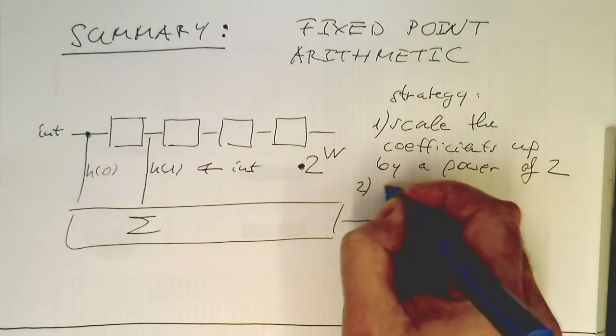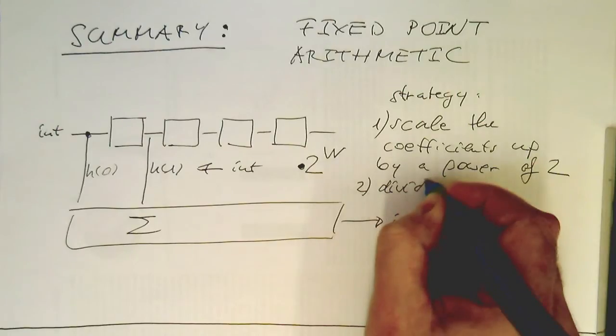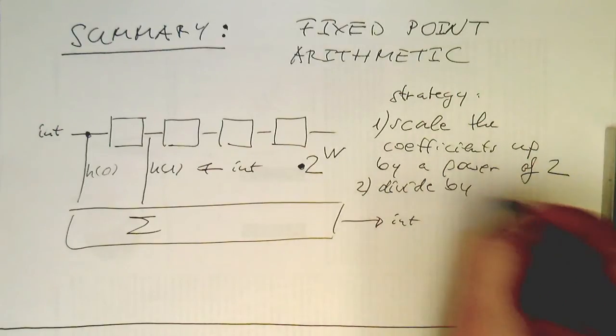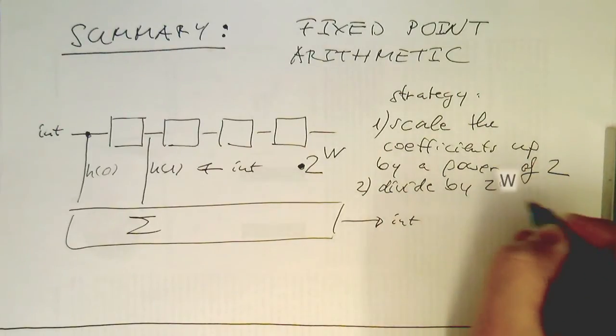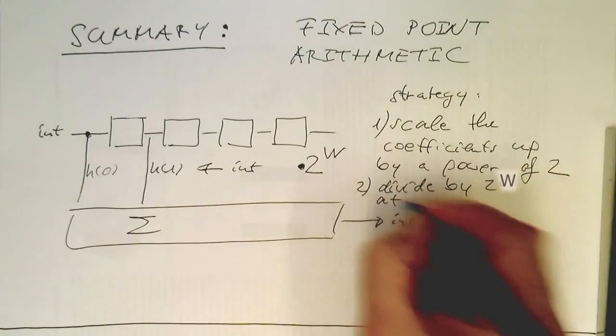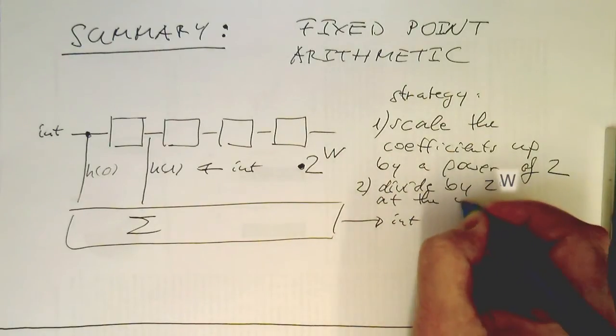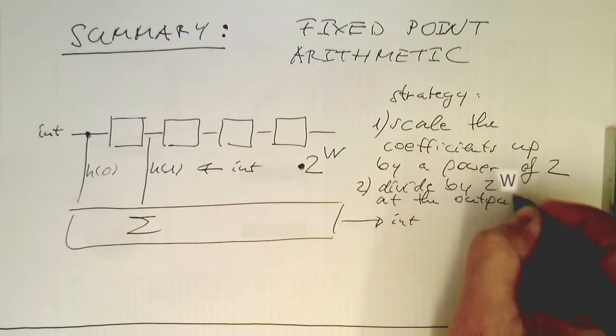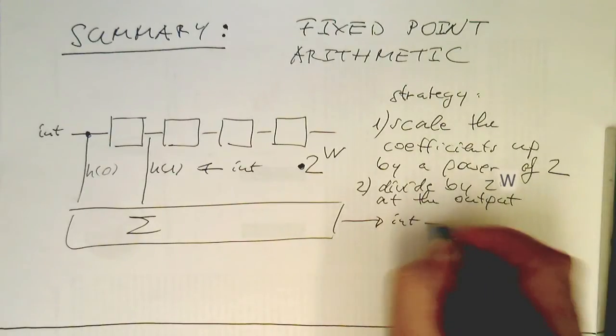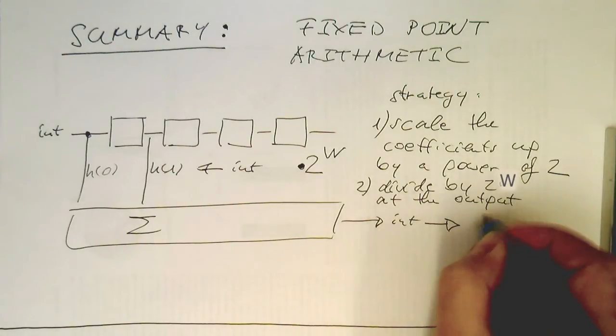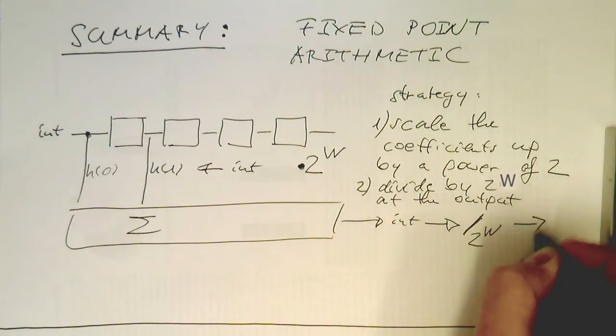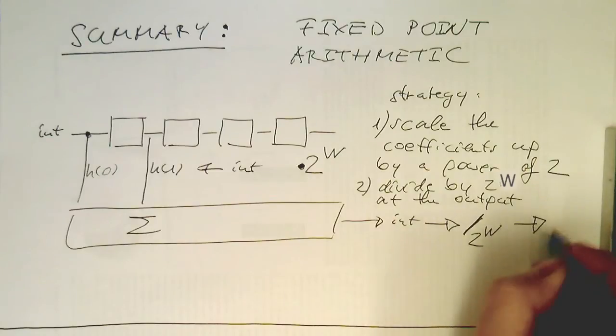And then the second one is divide by 2 to the w at the output. What we're getting out here, we just divide this by 2 to w. And then this is our result here.